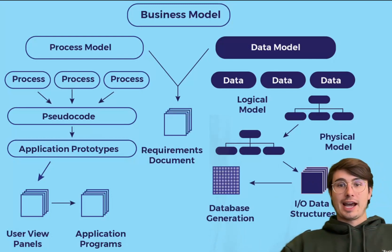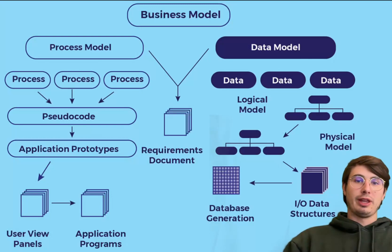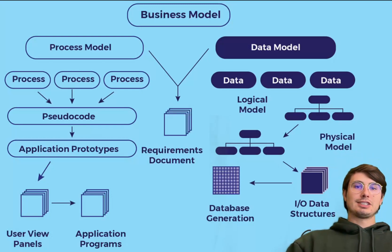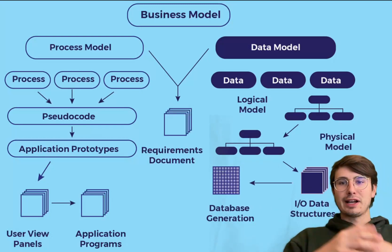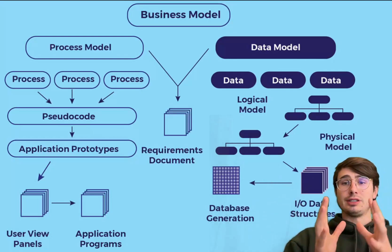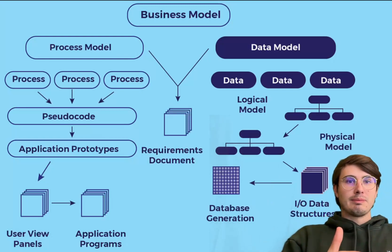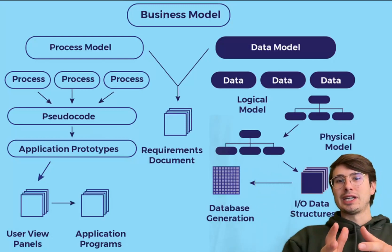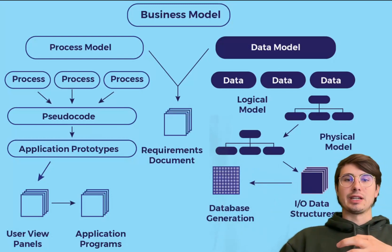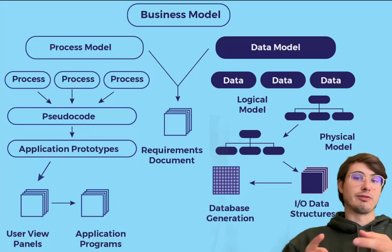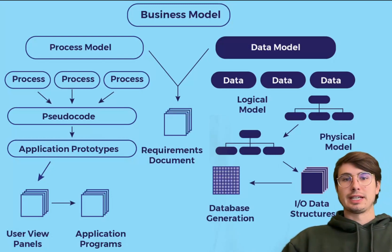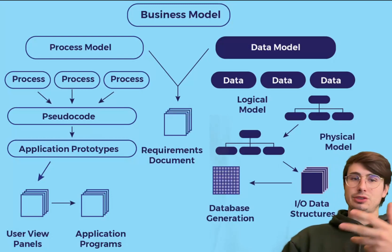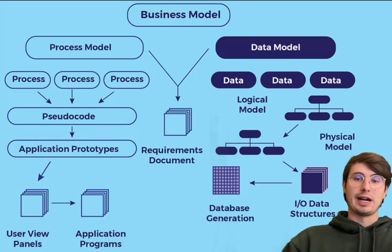Data warehousing consolidates everything into a single repository that supports business intelligence and reporting. Effective modeling needs to support scalability and query speed — if you have tons of data in a single warehouse, an efficiently designed database means you're not spending tons of money and time waiting for queries to run. Challenges include designing models flexible enough to evolve with changing data needs, handling performance degradation at large volumes, and ensuring security and compliance. If you want a video breaking down all the different types of data models, check out my other video on that.